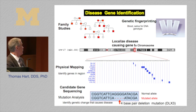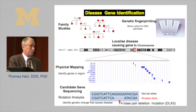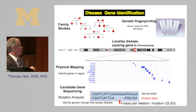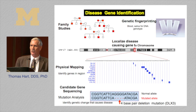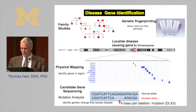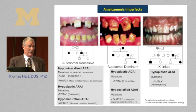Nowadays you can look in databases to see what genes are in a genetic interval. Before databases, you had to determine what genes were in the interval and then sequence through candidate genes until you identified a genetic alteration responsible for the gene defect. This approach has been used to identify the genes for many of the 3,500 Mendelian conditions reported to date.